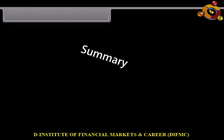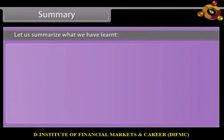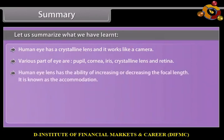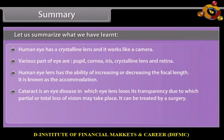Summary. Let us summarize what we have learned. The human eye has a crystalline lens and it works like a camera. Various parts of the eye are the pupil, cornea, iris, crystalline lens, and retina. The human eye lens has the ability of increasing or decreasing the focal length — this is known as accommodation. Cataract is an eye disease in which the eye lens loses its transparency, due to which partial or total loss of vision may take place. It can be treated by surgery.